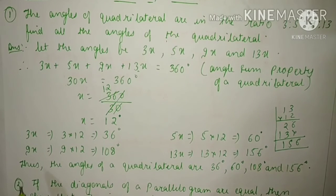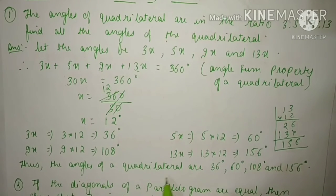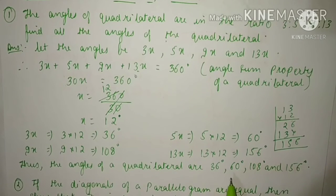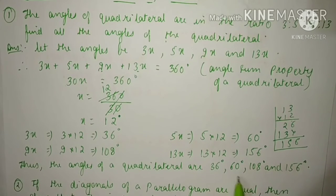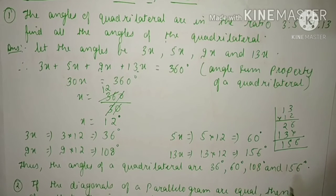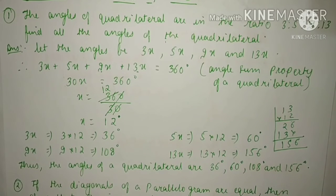Thus, the angles of a quadrilateral are 36°, 60°, 108°, and 156°.